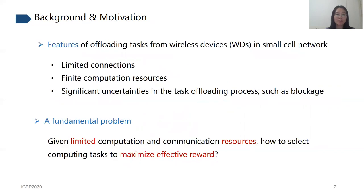Now we analyze the features of task offloading from wireless devices in small cell networks. First, due to physical limitations of 5G such as millimeter wave channel sparsity, each SCN can only establish a fixed number of connections to accept uploaded tasks. Second, a lower powered SCN may support only a small edge server with finite computation resources. Third, there exist uncertainties in the task offloading process — for example, millimeter wave signals are prone to blockage due to weak diffraction capabilities. Once blockage happens, the execution of a task is interrupted. Therefore, an efficient system is needed to guarantee quality of task offloading service.